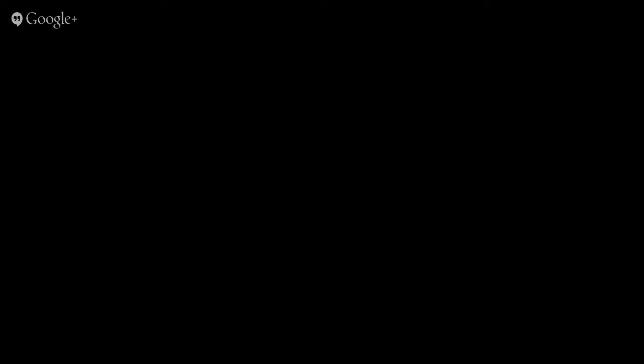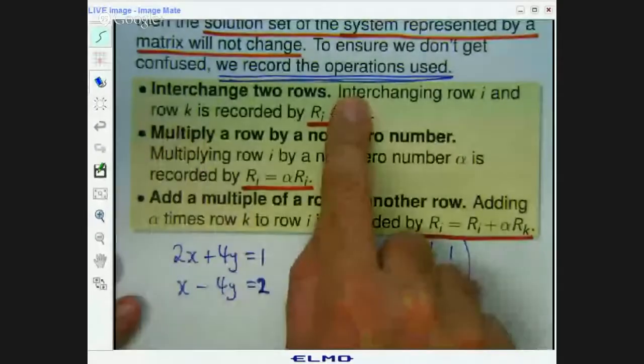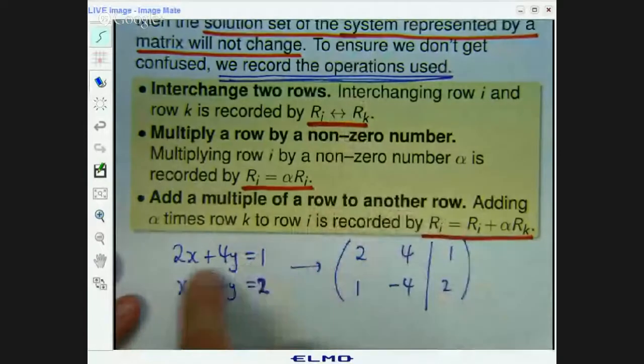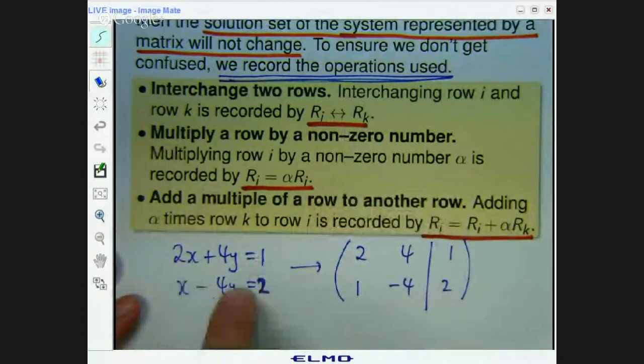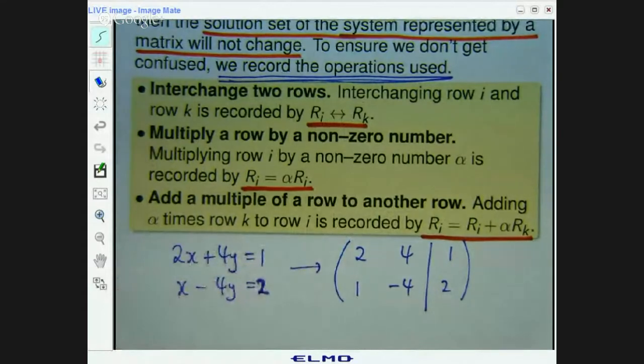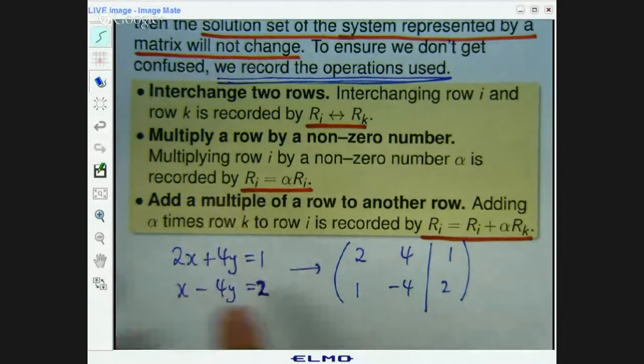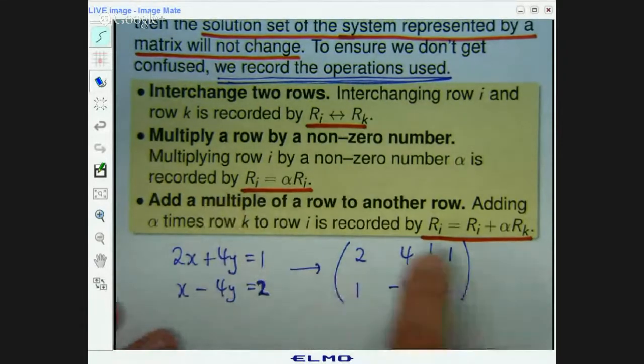Okay. Let's look at this linear system here. Interchange two rows. If I interchange these two equations, right, and write this one up here and this one down here, it's the same set of equations. Okay. So that means I can interchange this row with this row. Just flip them around and I'm not changing the solution set to the system.